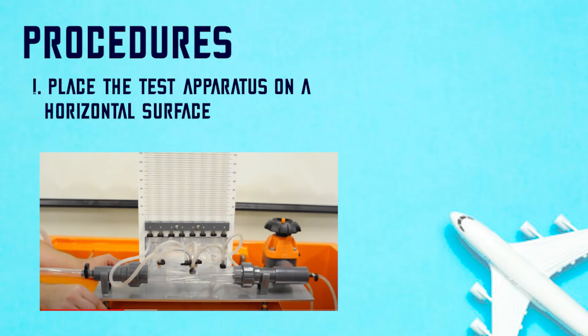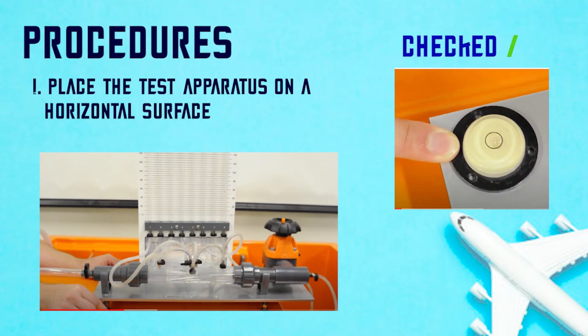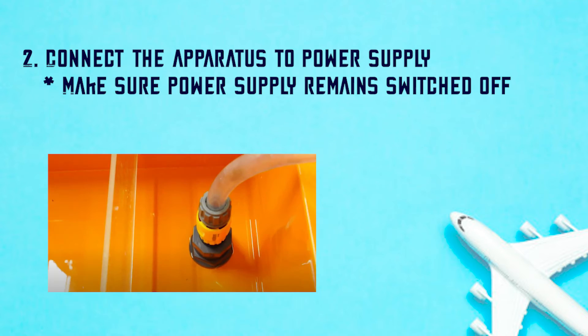Moving on to the procedure. First, place the test apparatus on a horizontal surface. Then, connect the apparatus to the power supply. Keep in mind that the power supply should still be turned off.